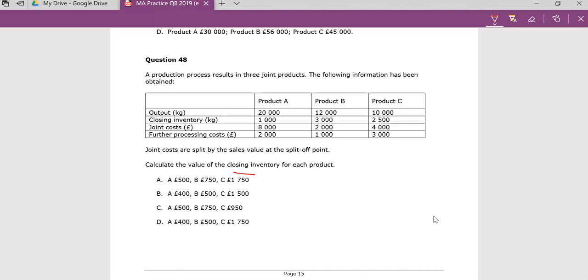So the key point here is, let's work out the full cost of making these things. Let's start. This question is almost slightly fair. It says that they give you the joint costs. They tell you that your joint cost is $8,000, and then you had some further processing of $2,000, which gave you a total cost therefore of $10,000.